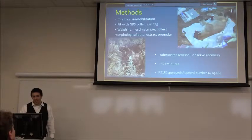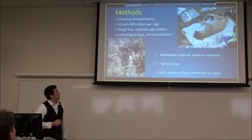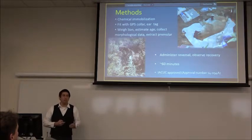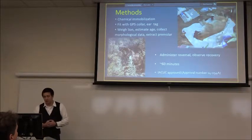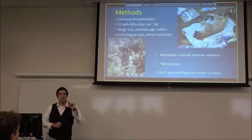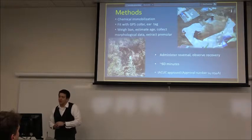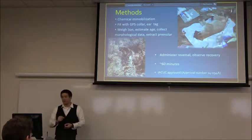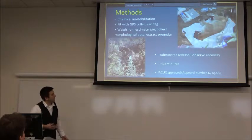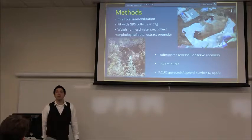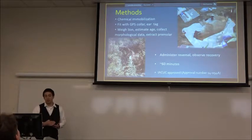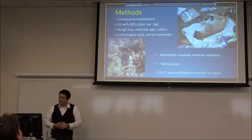Once we caught a lion, we used chemical immobilization, removed them from the trap, and fitted them with a GPS collar. Every animal received a unique ear tag. We recorded weight, sex, estimated age, body measurements, injuries, and parasites. If time allowed, I extracted a small third molar — a vestigial tooth behind the canine — to verify age to the exact year. After collecting data, we administered the reversal, stepped back, and watched the lion recover. The whole process took about 60 to 90 minutes.